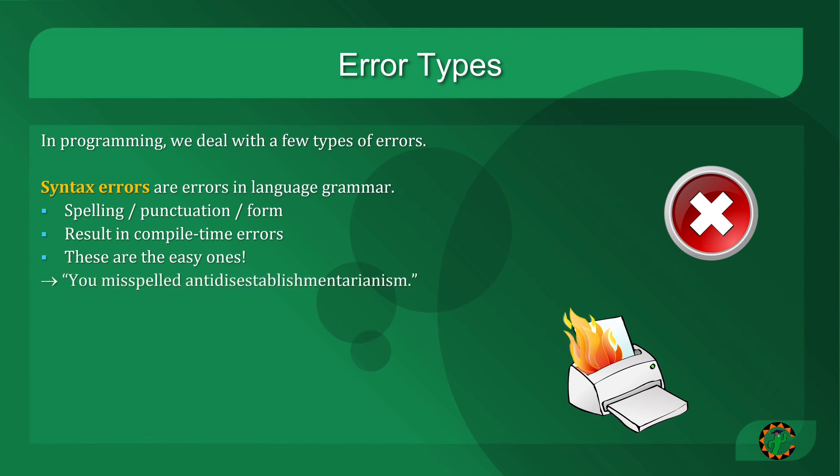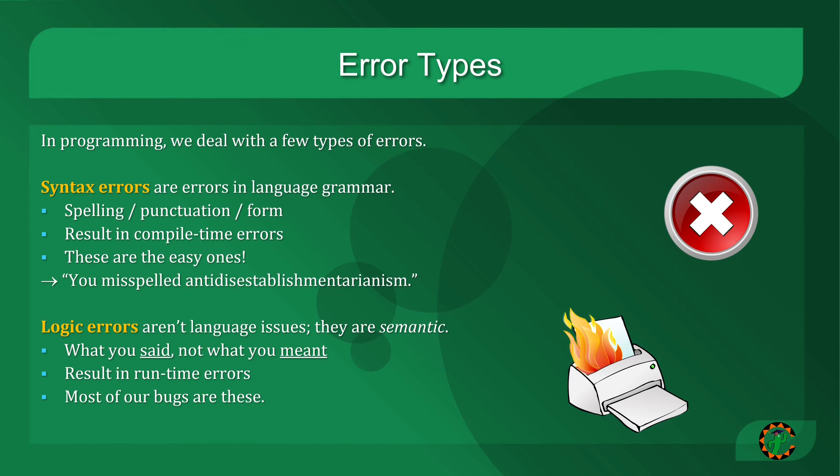Logic errors, on the other hand, are not language issues. Instead, they are semantic. They deal with the meaning of the code. It's the difference between what you said and what you actually meant. And a computer will always do exactly what you said, but not necessarily what you meant, if those diverge from one another. These result in runtime errors, errors when you run the program. And most bugs are logical. They are semantic in nature.